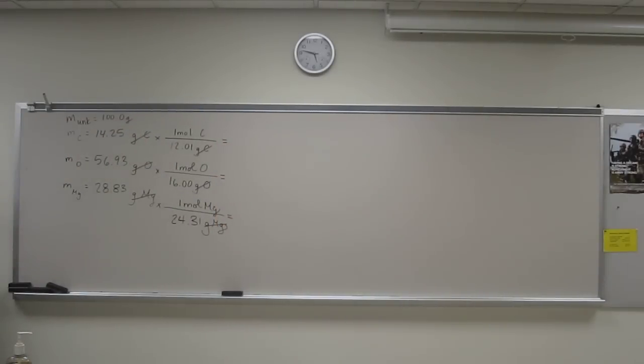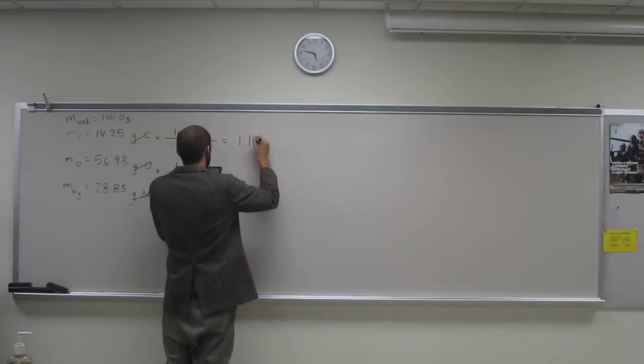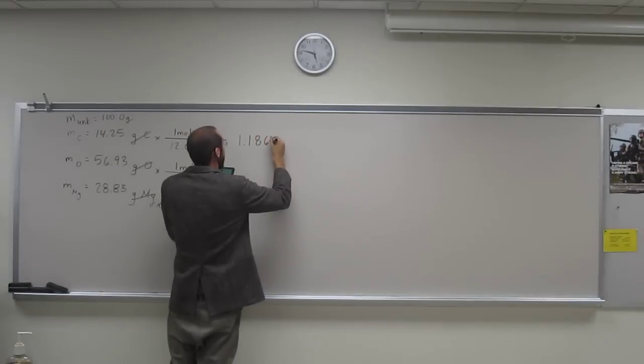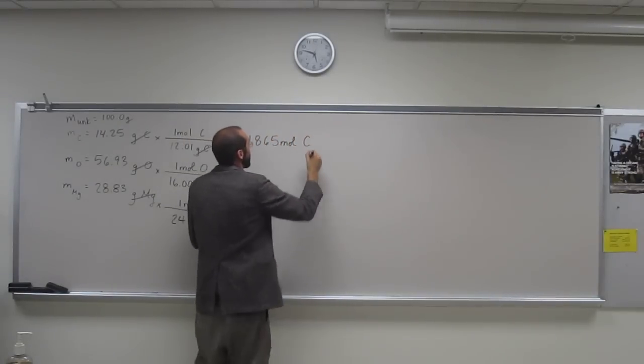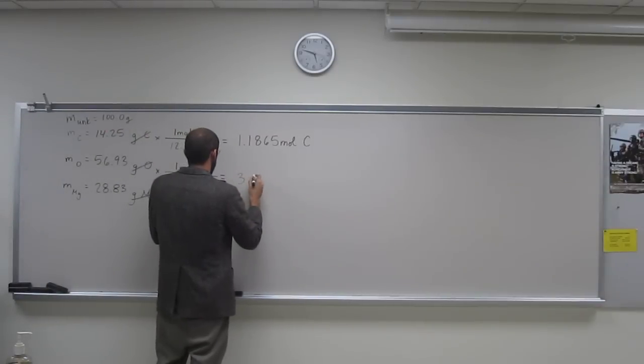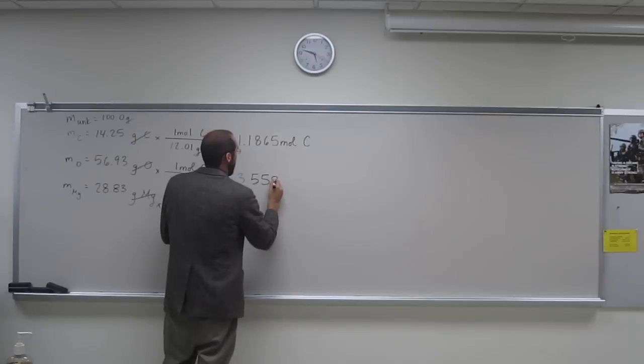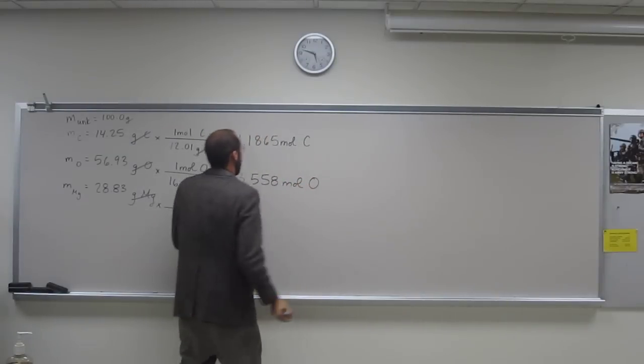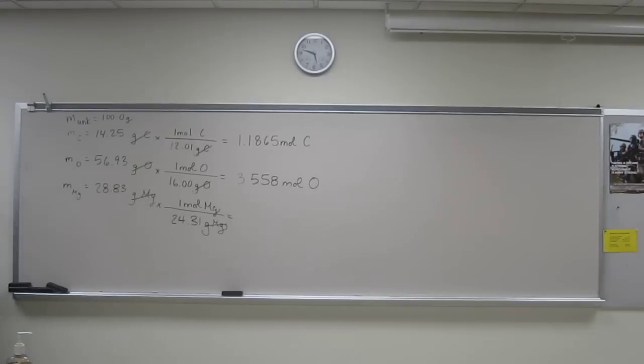Okay, and we get our number of moles from 100 grams of total, right? So let's just do it together, 14.25 divided by 12.01. And you guys can help me out if you want, 1.1865. And I'm just going to go out to a bunch of digits, not that it matters, because we're just going to cut them all off when we show the molecular function. Okay, so 56.93 divided by 16, 3.558. Okay, and then the moles of magnesium, 28.83 divided by 24.31, 1.1859.